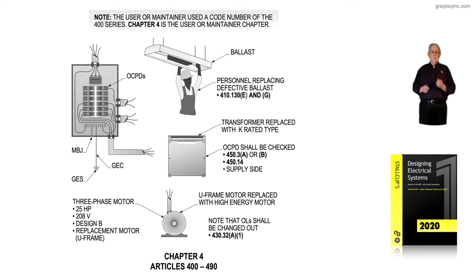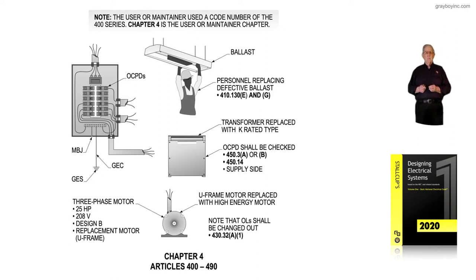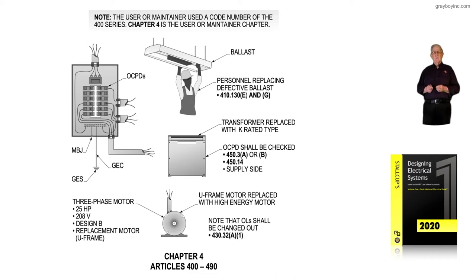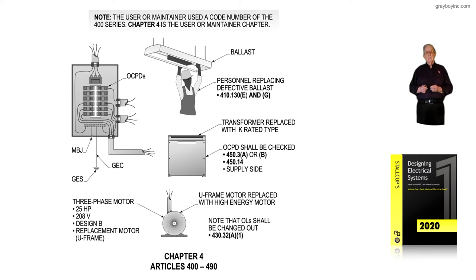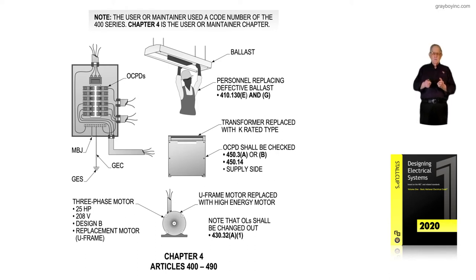Notice we have a three-phase motor that we've already designed everything for — it's 25-horse, 208-volt, Design B. If we were replacing that motor, and it was an old U-frame being replaced with a T-frame, we'd have to go to Article 430 to perform such a task. Notice that the overloads would usually have to be changed out in accordance with 430.32A1, sizing overloads at the minimum value to protect the motor, but you could drop the overload down if it did the job.